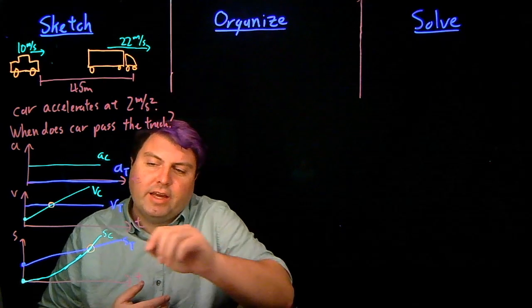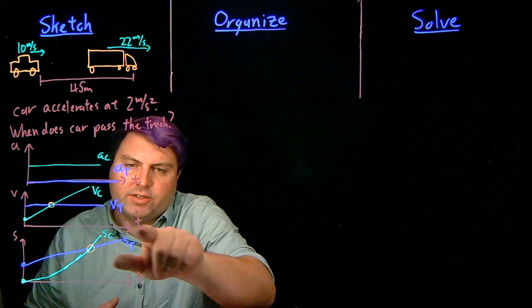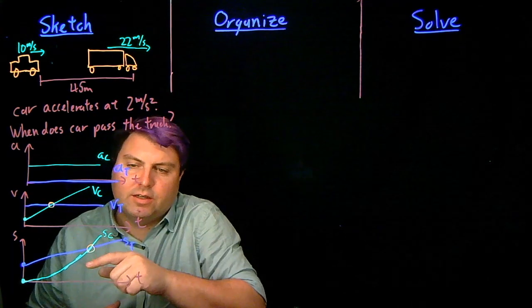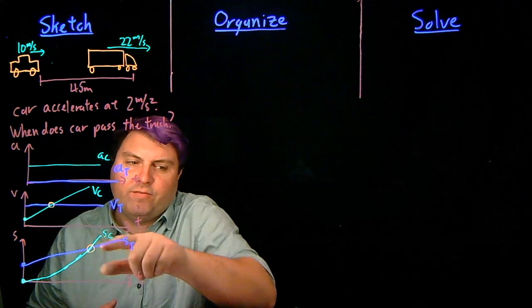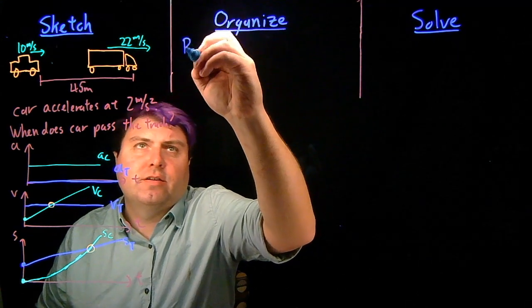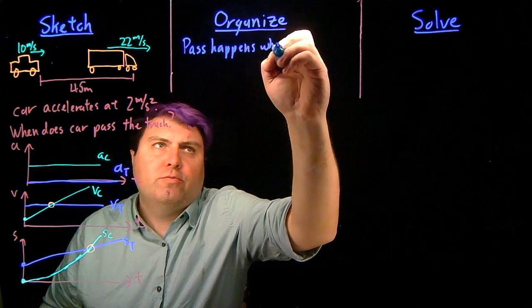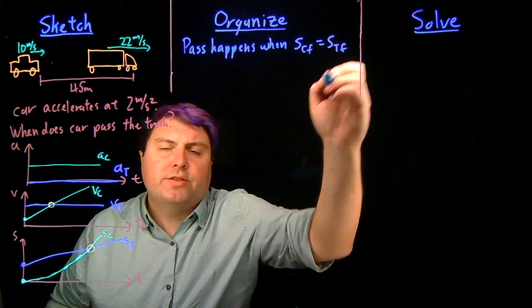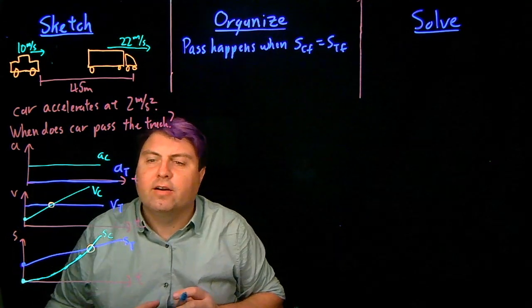Okay, so we're back and thinking about what these two represent. These two are on the velocity versus time graph. So when this happens, they have the same speed. For this, this is the position versus time graph. So at this point, they have the same position. So we have a pass happens when the car final position equals the truck final position. When they have the same position, then they are right there.